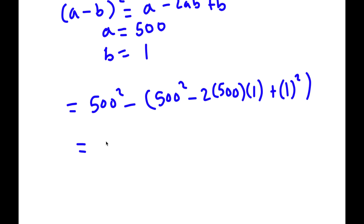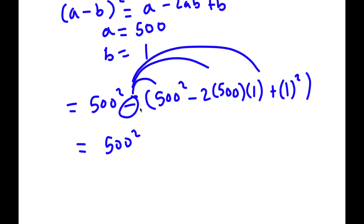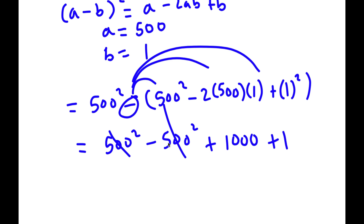Distributing the negative sign to all terms: 500 squared minus 500 squared plus 1000 minus 1. The 500 squared terms cancel, leaving 1000 plus 1, which is simply 1001. So 1001 is my answer.